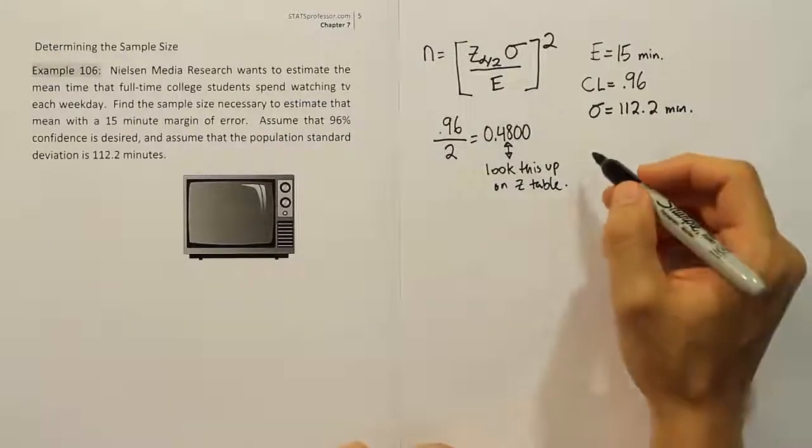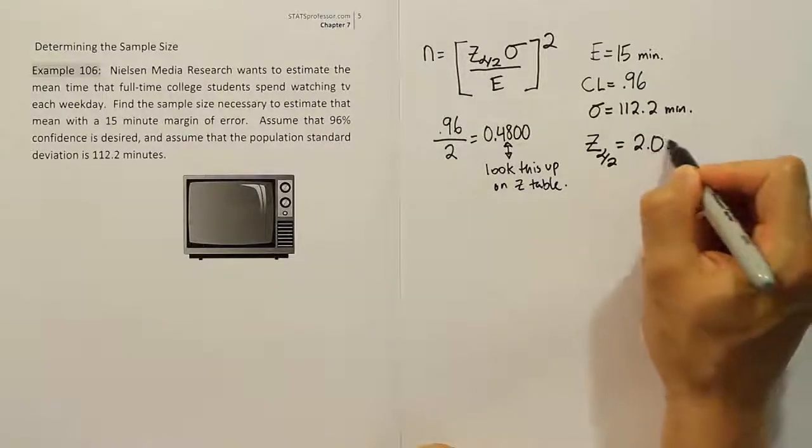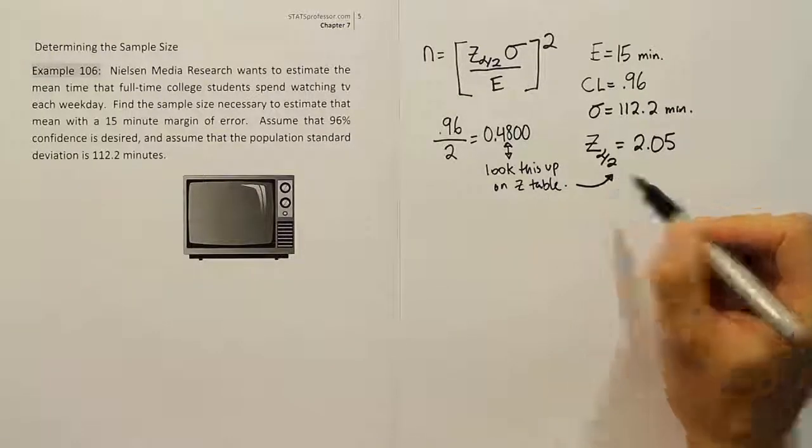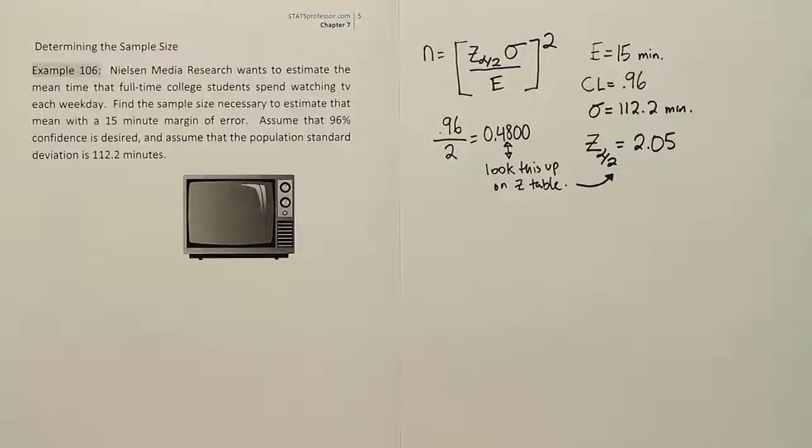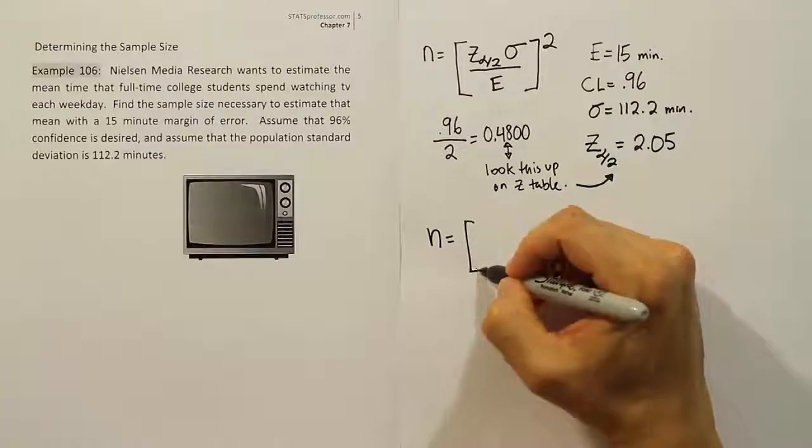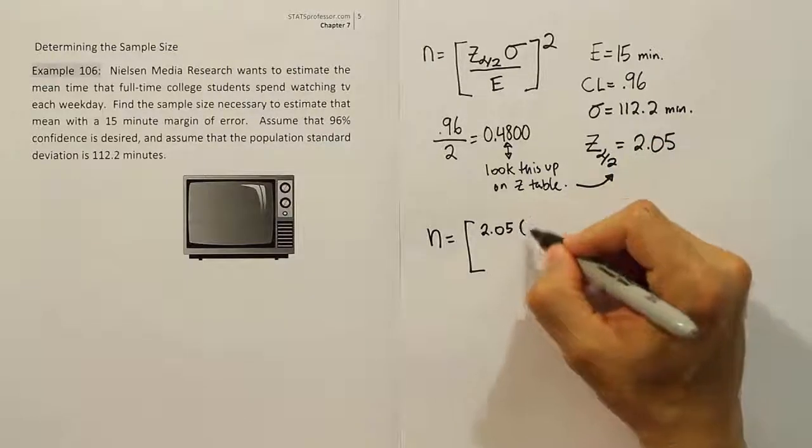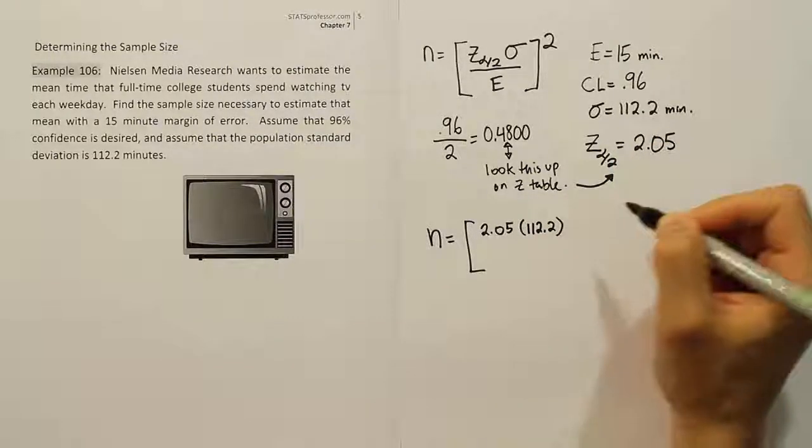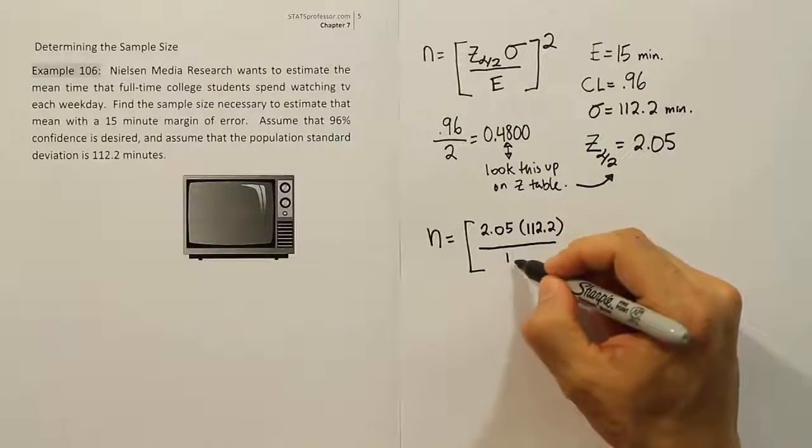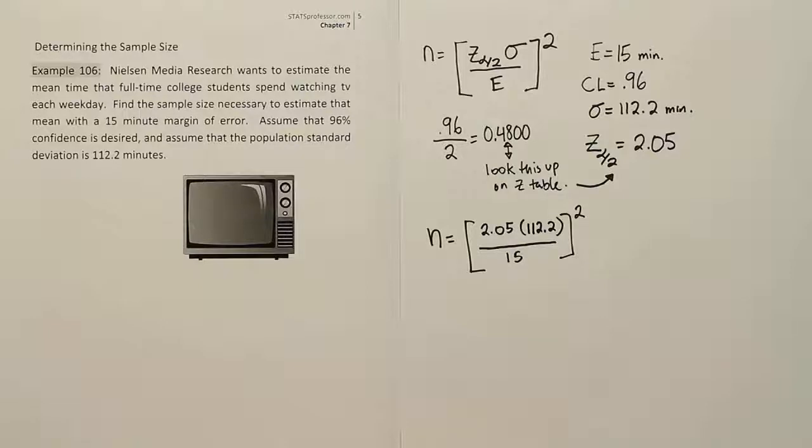We found that Z_α/2 = 2.05. Now we'll plug all these values into our formula for n. So n equals (2.05 times 112.2 divided by 15), squared. We don't need to put the units since they cancel out.